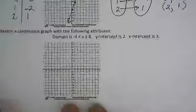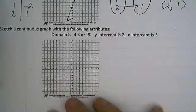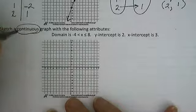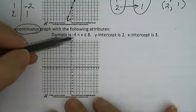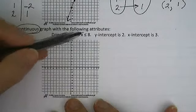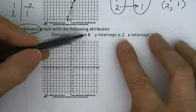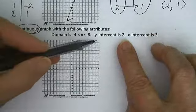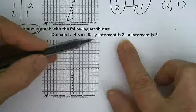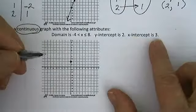Sketch a continuous graph with the following attributes. It's continuous. The domain is bigger than negative 4, x can be equal to positive 8. The y-intercept is 2, the x-intercept is 3.